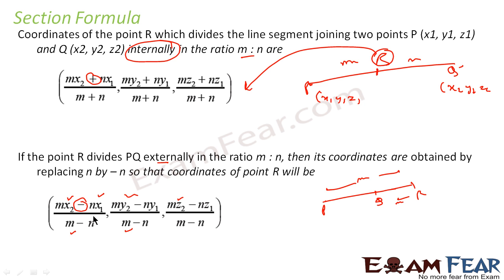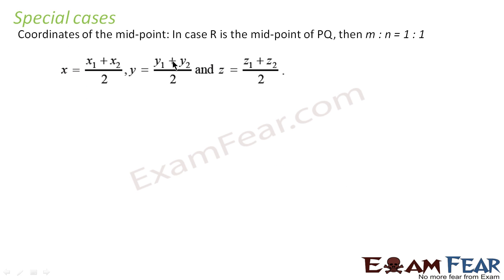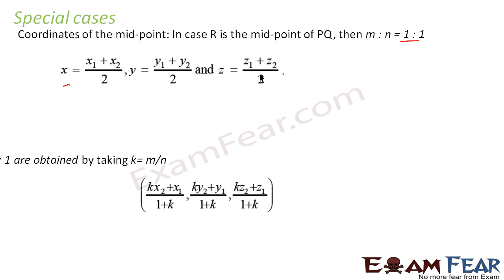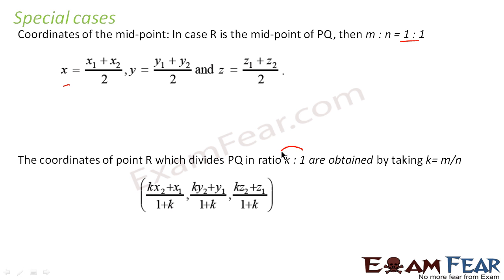Just remember this formula; we'll be using it to solve questions. Also, there is a special case where m equals n, that is, it is dividing in 1:1 ratio. Then x = (x1+x2)/2, y = (y1+y2)/2, and z = (z1+z2)/2. Similarly, if it divides in k:1 ratio instead of m:n, where k = m/n, then the formula becomes (kx2+x1)/(1+k), (ky2+y1)/(1+k), and (kz2+z1)/(1+k). Same formula, just using k and 1 instead of m and n.